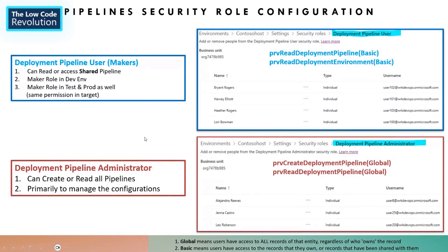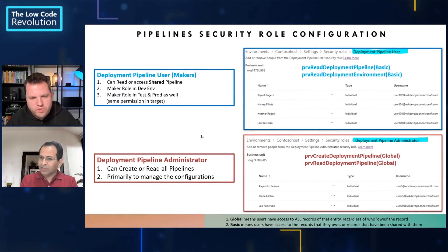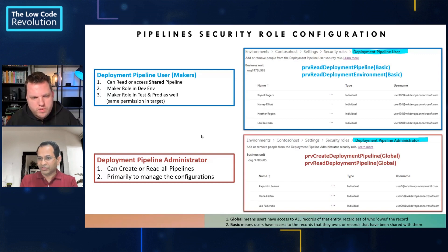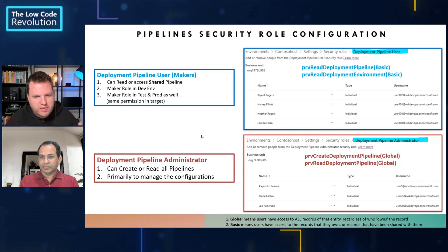The deployment pipeline administrator role, shown on the lower left, allows users to create or read all pipelines — primarily to manage pipeline configuration. This role has privilege to create deployment pipeline at a global level and read deployment pipeline at a global level. People with this role don't need to be system admin of the pipeline host; you can think of this role as geared towards ALM operations in the pipeline hosting environment.